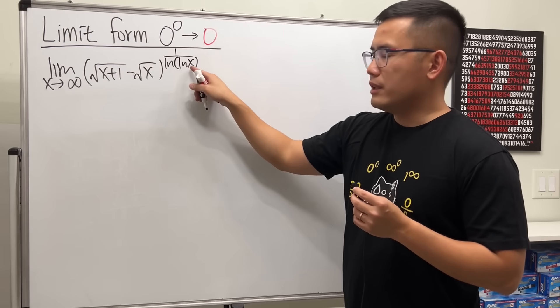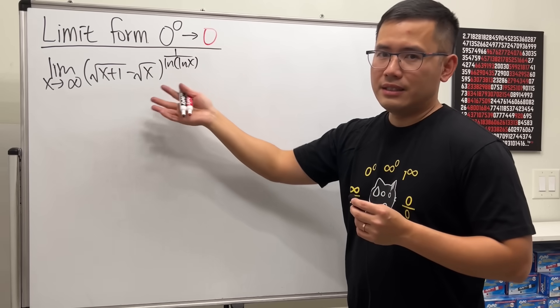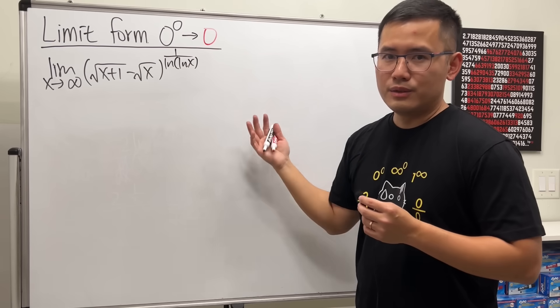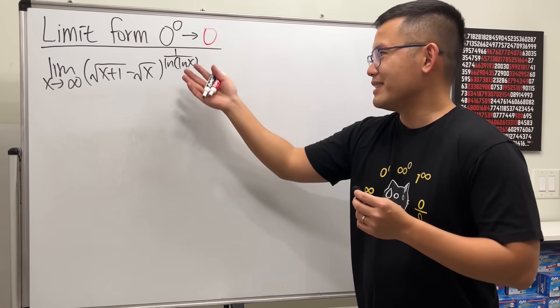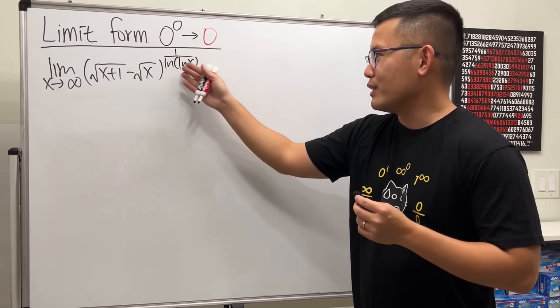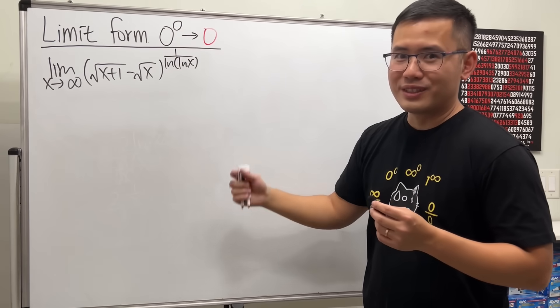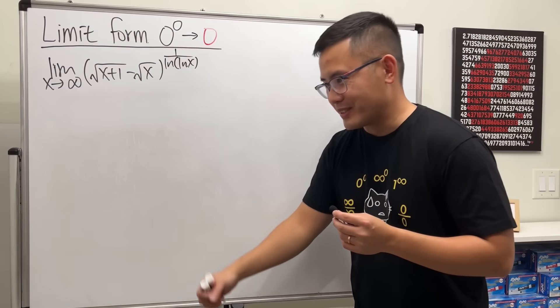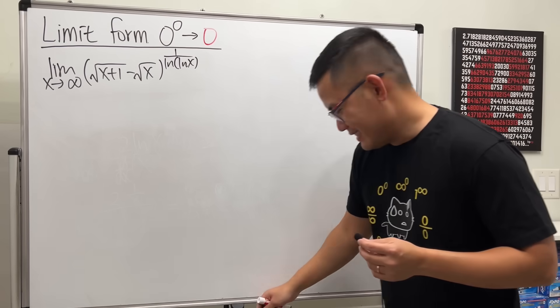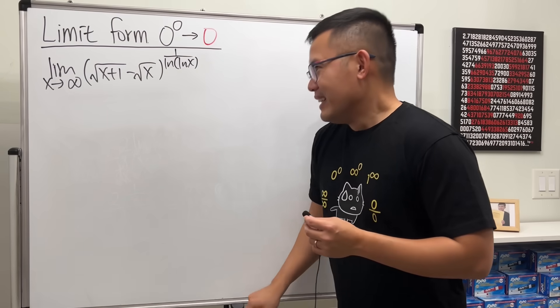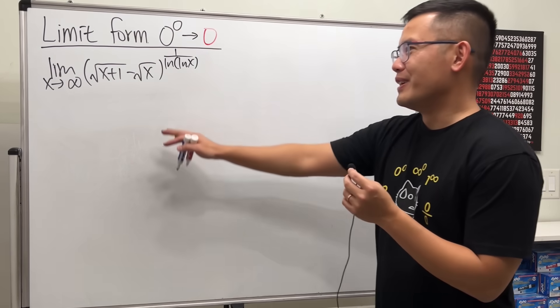If I put 1 over ln of x, then the answer is 1. So I tried it with 1 over ln of ln of x, and it worked. I was so happy. I feel so emotional anyway.